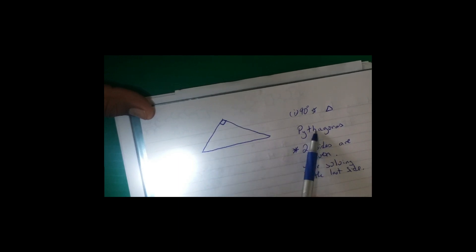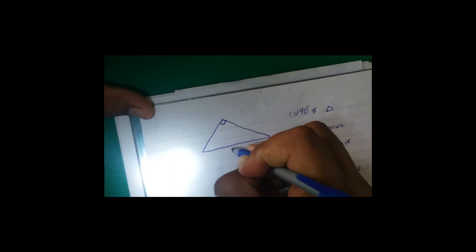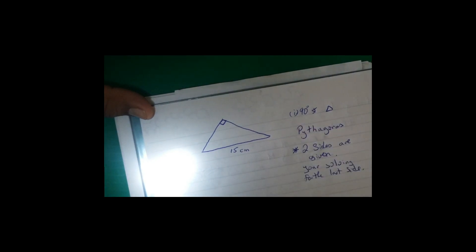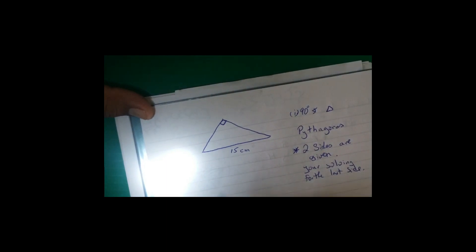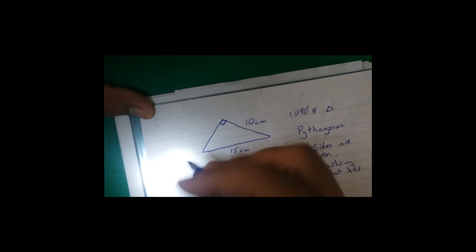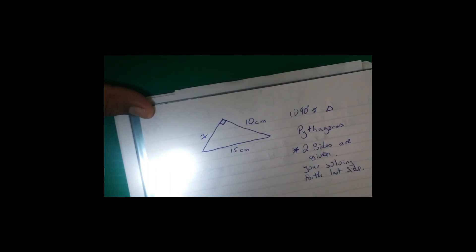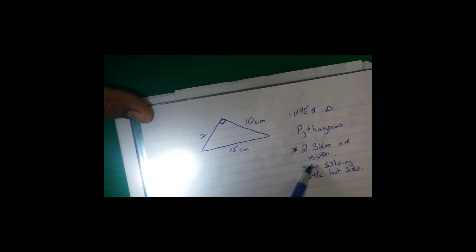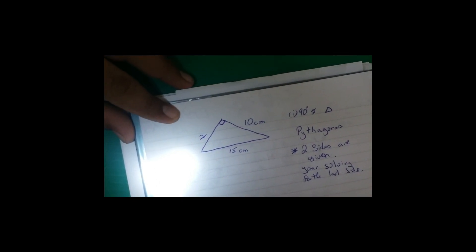How do we know if it is going to be Pythagoras? Two sides are going to be given. So in this case, let me give you two sides — this one is 15 cm and this side above is going to be 10 cm. I'm going to insert X here; X tells you which side you're solving for. Two sides given, yes. Solving for the last side, yes. Is it a 90 degrees? Yes. So we can use Pythagoras.